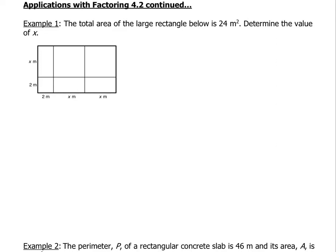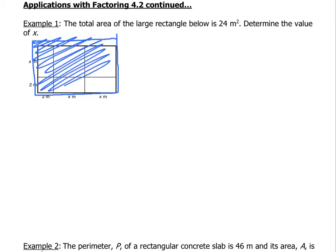Let's get started with the first example. The total area of the large rectangle below is 24 meters squared. So I'm talking about this entire big rectangle. The area here is 24 meters squared. Now what we need to do is determine the value of x.